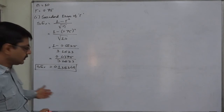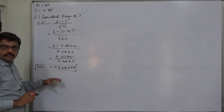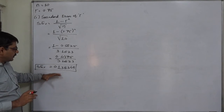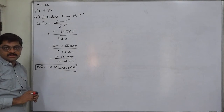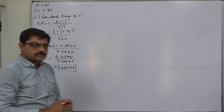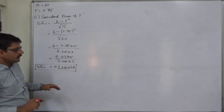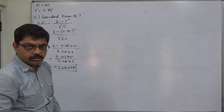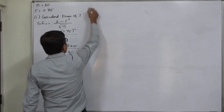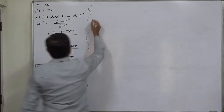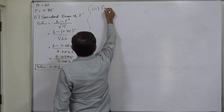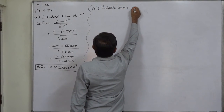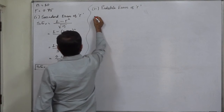The standard error of the sample correlation coefficient is 0.138349. On the basis of this we can calculate the lower limit and upper limit of the population correlation coefficient — that will be coefficient minus standard error and coefficient plus standard error. But nowadays the more common concept is probable error, so all these calculations we are going to make with the probable error only.